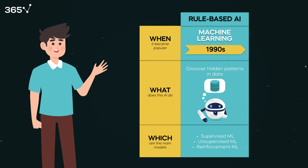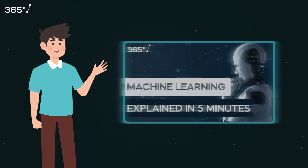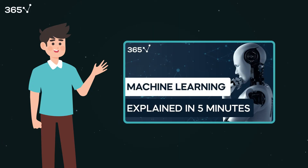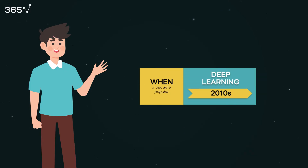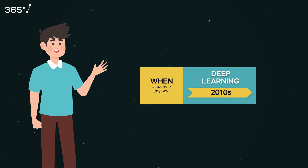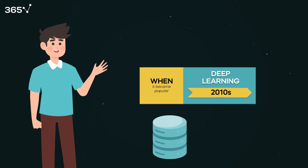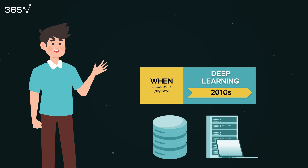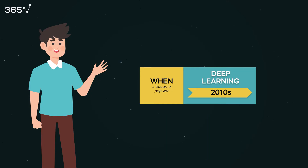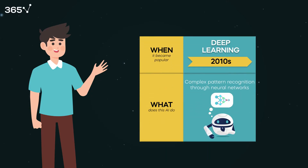If you want to learn more about how these types of machine learning work, please check out our YouTube video, What is Machine Learning? The next significant advancement was deep learning in the 2010s, when large-scale annotated datasets became available and computers were powerful enough to train a deep neural network. Deep learning is a branch of machine learning which emulates the human brain, representing an artificial neural network that passes information through several layers — hence 'deep.'